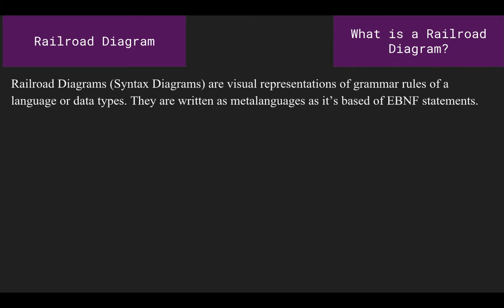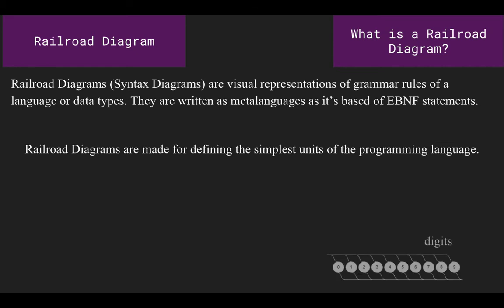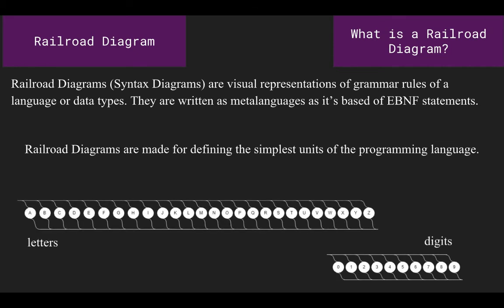Railroad diagrams, or otherwise known as syntax diagrams, are a visual way of representing or defining grammatical rules of language or even data types. These diagrams are a graphical alternative for eBNF, but are written as meta-languages. In a railroad diagram, it starts off with the basics of defining the simplest units of the programming language. An example of this would be digits and letters to start off with, then going to words, numbers, stated variables, and finally statements which only the language can define in the used terms.